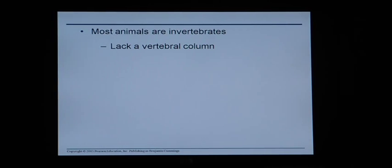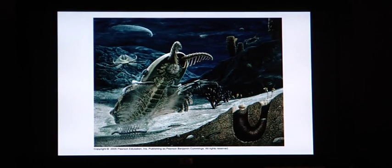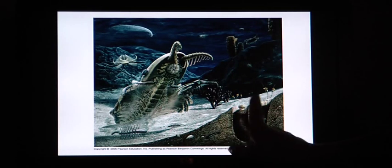Most animals are invertebrates, which means they don't have a vertebral column — no vertebrae, no bones. Examples would be something like an insect or a worm; they don't have backbones or rib cages. Some are squishy and some actually have hard shells. This might have been one of the world's earliest invertebrates — a picture of what we think some of the first invertebrates looked like in the ancient seas. It kind of looks like a giant bug. We can also see some other examples of little invertebrates, like little aquatic insects.